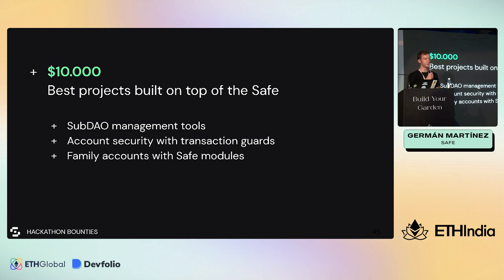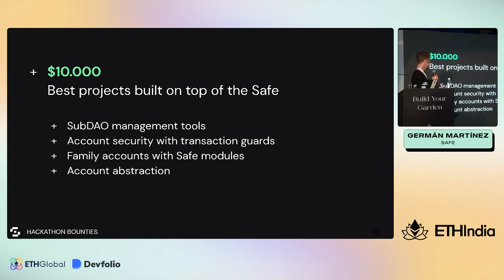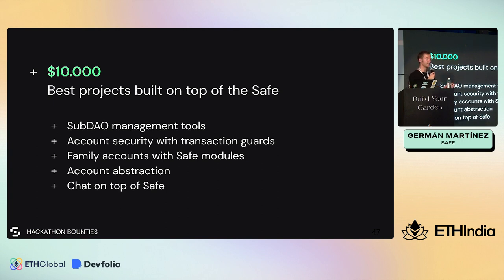Also working with modules - for example, a family that shares an account where different people have different levels of access and different rights. Anything related to account abstraction that you can think of. Another idea: creating a chat where signers of the Safe can interact with each other. Also a tool that allows a Safe to publish official messages that anyone can read. And whatever else you want to build.